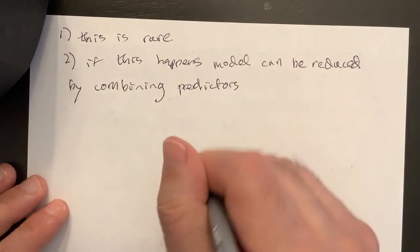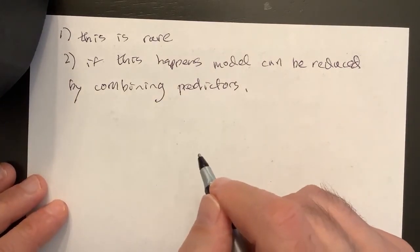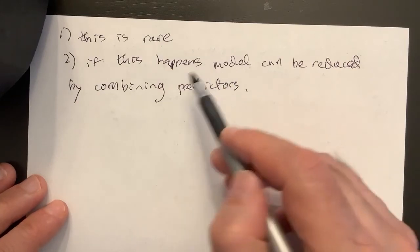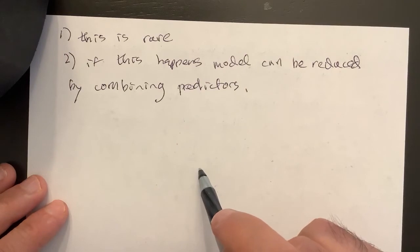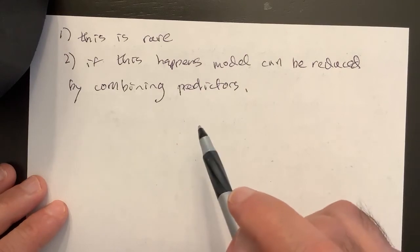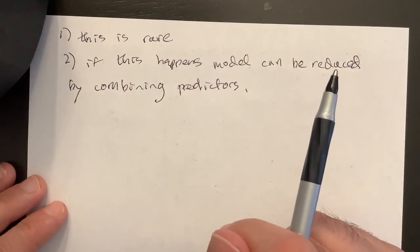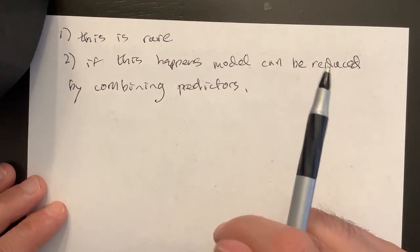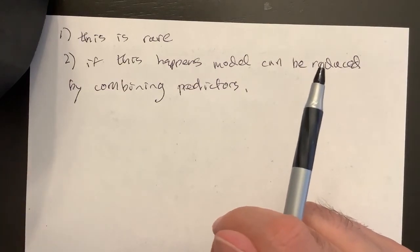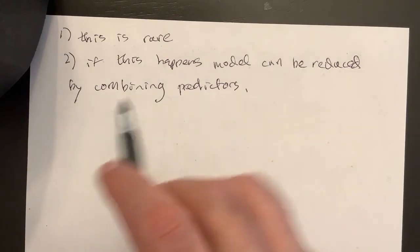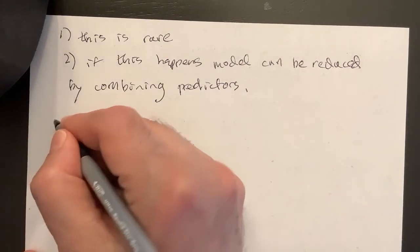A model can be reduced by combining predictors, by adding them, for example making a new one, or some other linear combination of them to create a new predictor that involves both those things. The units might change but still all the same information is there, so this is a good thing.